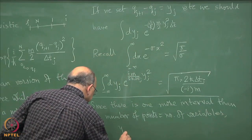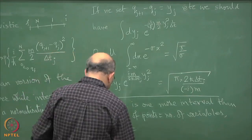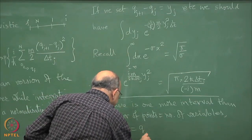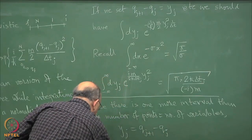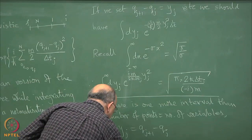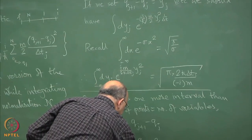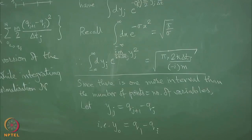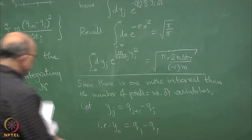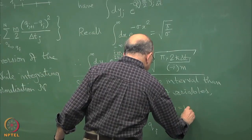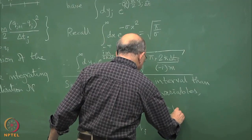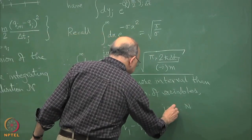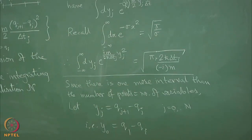Let y_j be equal to q_{j+1} minus q_j, i.e., y_0 is equal to q_1 minus q_i. And now we have n+1 y_j's to integrate over, so j goes from 0 to n.